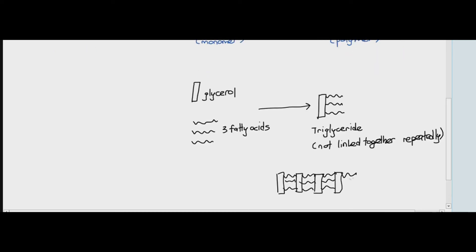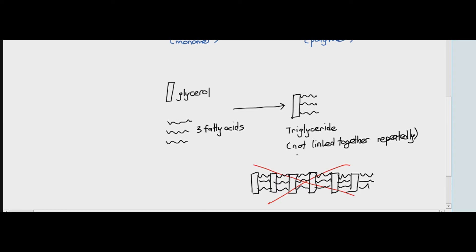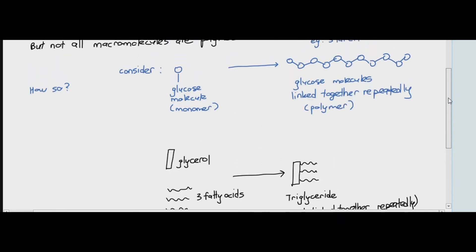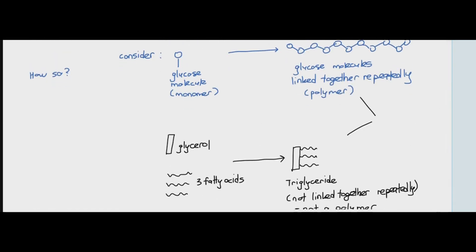It's not linked together to form a kind of, I'm just drawing something like an electrical fence over there. No, that's not what triglyceride is. Triglyceride is just basically made up of one glycerol and three fatty acids. So it's not repeated. So we cannot consider triglyceride a polymer.